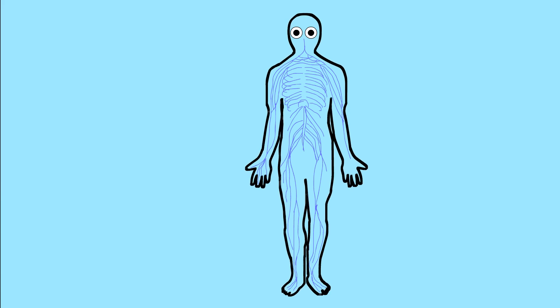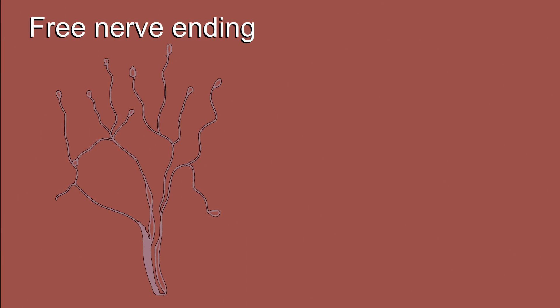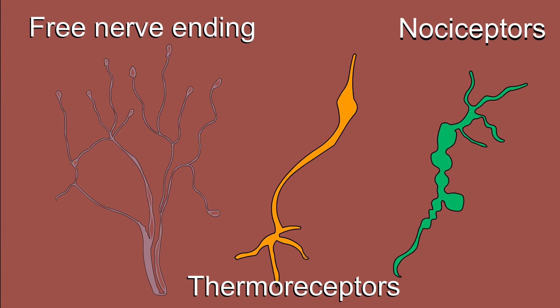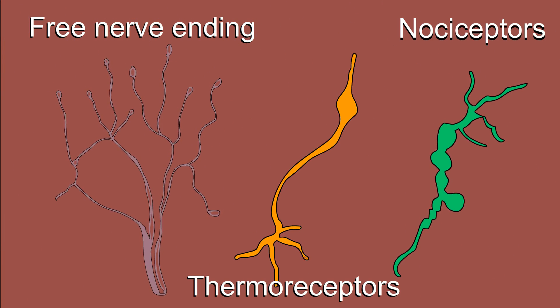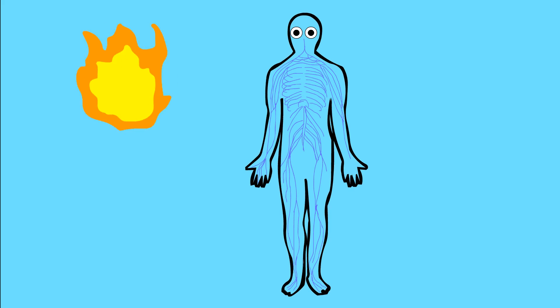There are a few different types of receptors that react to temperature. Free nerve endings, thermoreceptors, and nociceptors are some of the main ones that help us feel temperature. Some respond to heat, some to cold, and some to both. And that's where feelings can sometimes get a little bit weird.